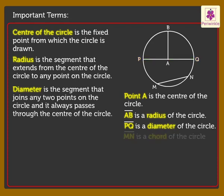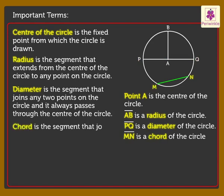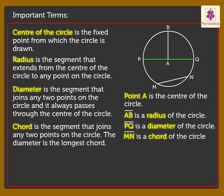Line segment MN is a chord of the circle. Chord is the segment that joins any two points on the circle. The diameter is the longest chord.